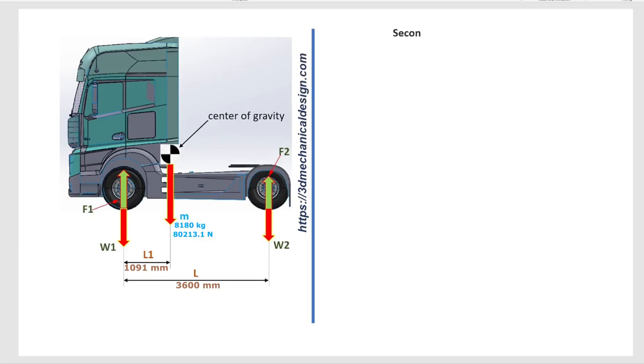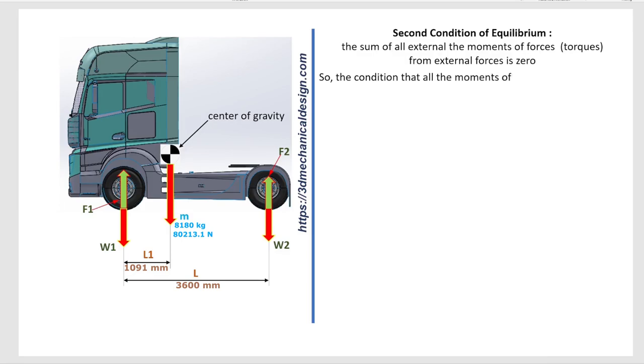Second condition of equilibrium. The sum of all external the moments of forces, torques, from external forces is zero. So the condition that all the moments of forces acting on the body is zero leads us to the equation. The sum of M equals 0. Mf1 plus Mf2 plus Mm equals 0.